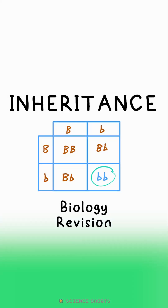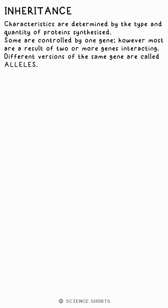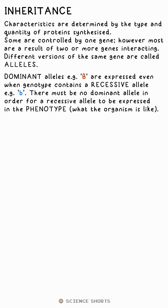Some characteristics are controlled by just one gene, like colorblindness. These different types of the same gene are called alleles. Usually, characteristics are dependent on two or more genes and them interacting.